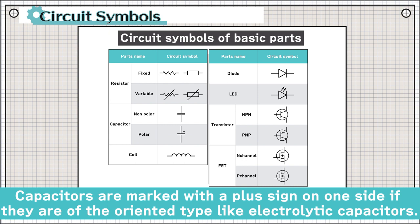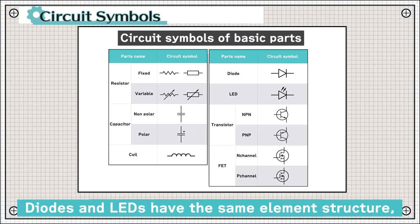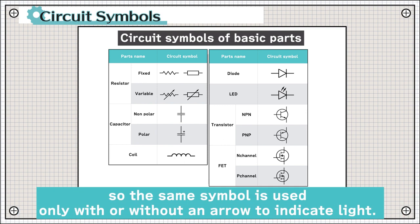Capacitors are marked with a plus sign on one side if they are object-oriented type, like electrolytic capacitors. Diodes and LEDs have the same elementary structure, so the same symbol is used only with or without an arrow to indicate light.